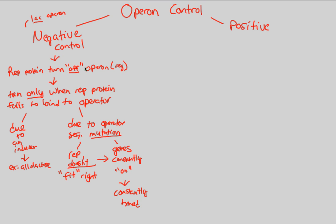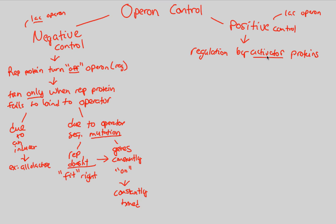Think of negative control as having the operon off at all times by default. Positive control, which can also be seen in the lac operon, is regulation by activator proteins — whereas negative control uses repressor proteins. These activator proteins bind to a specific part of the DNA sequence and, instead of repressing transcription, actually stimulate it. We'll see exactly how that happens in the next couple of flowcharts.